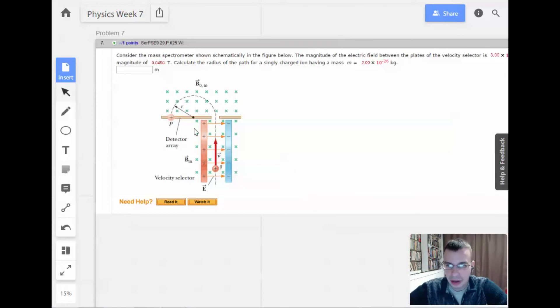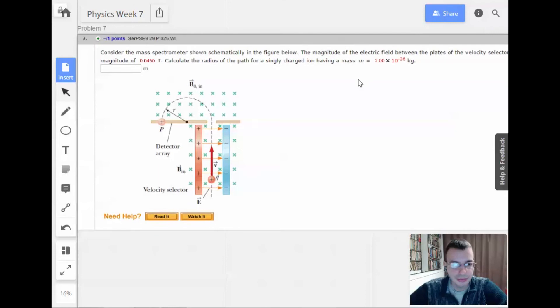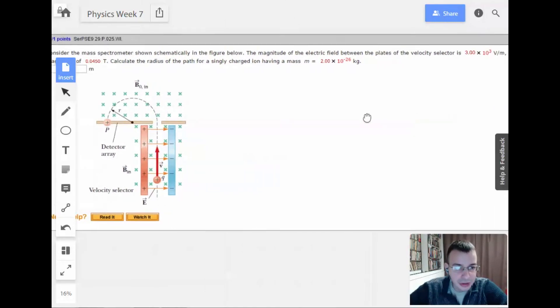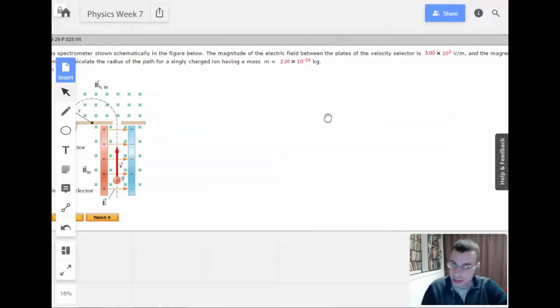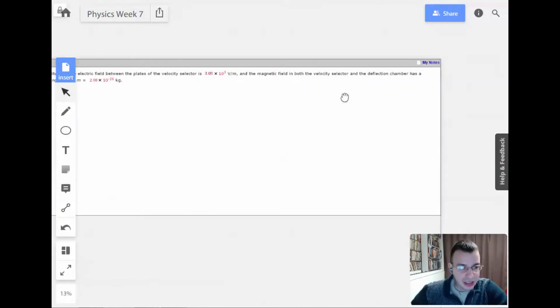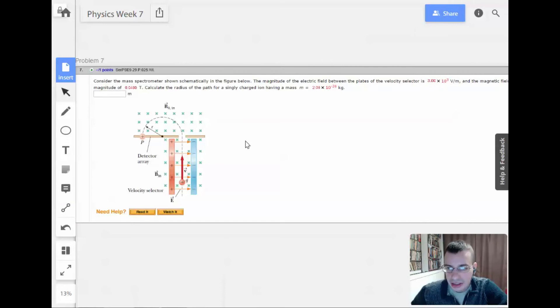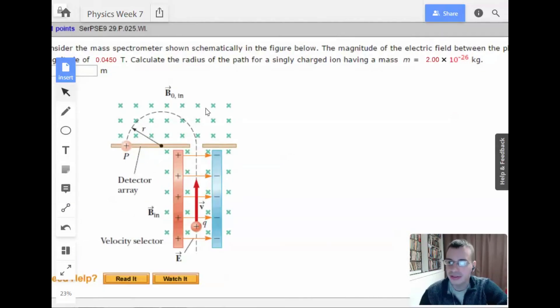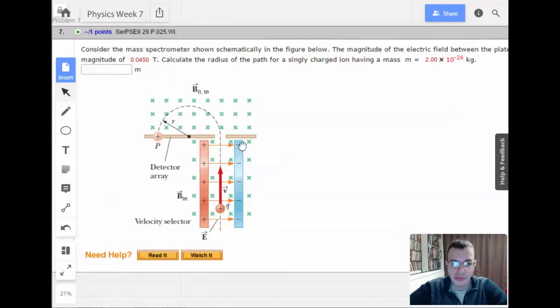Alright, week seven, problem seven. Consider the mass spectrometer shown schematically in the figure below. The magnitude of the electric field between the plates of the velocity selector is 3 times 10 to the third, I'm going to call that 3000, and the magnetic field in both the velocity selector and the detection chamber has magnitude of 0.045 teslas. Calculate the radius of the path for a singly charged ion having a mass of 2 times 10 to the negative 26 kilograms.